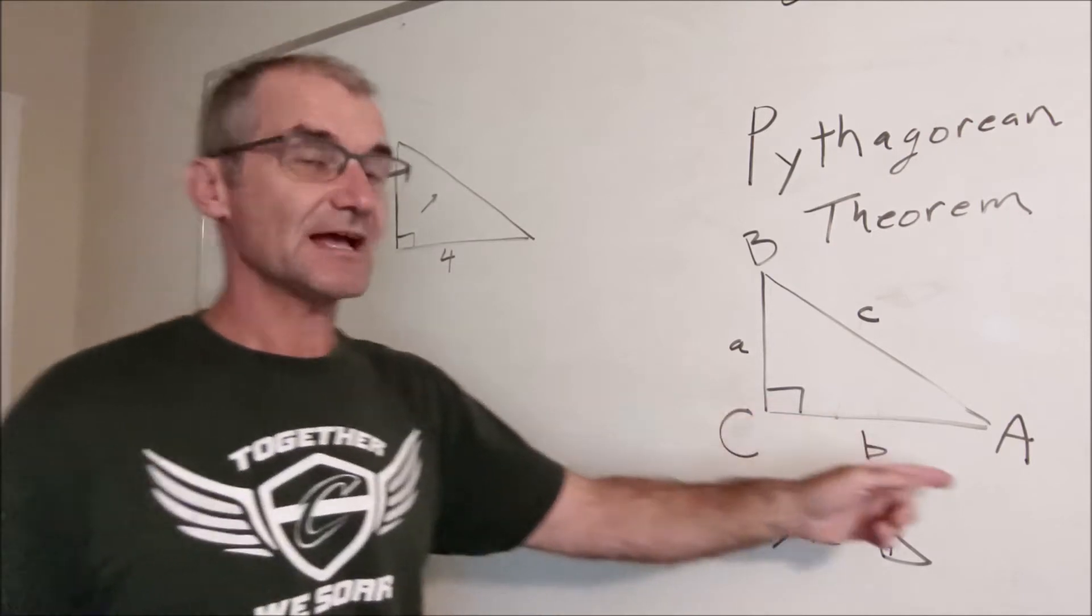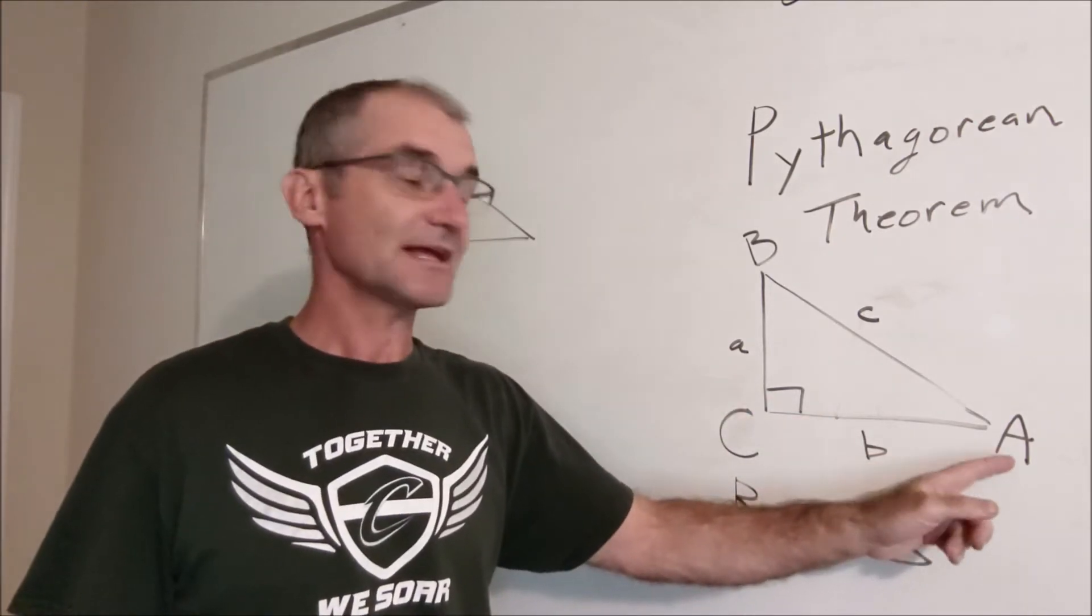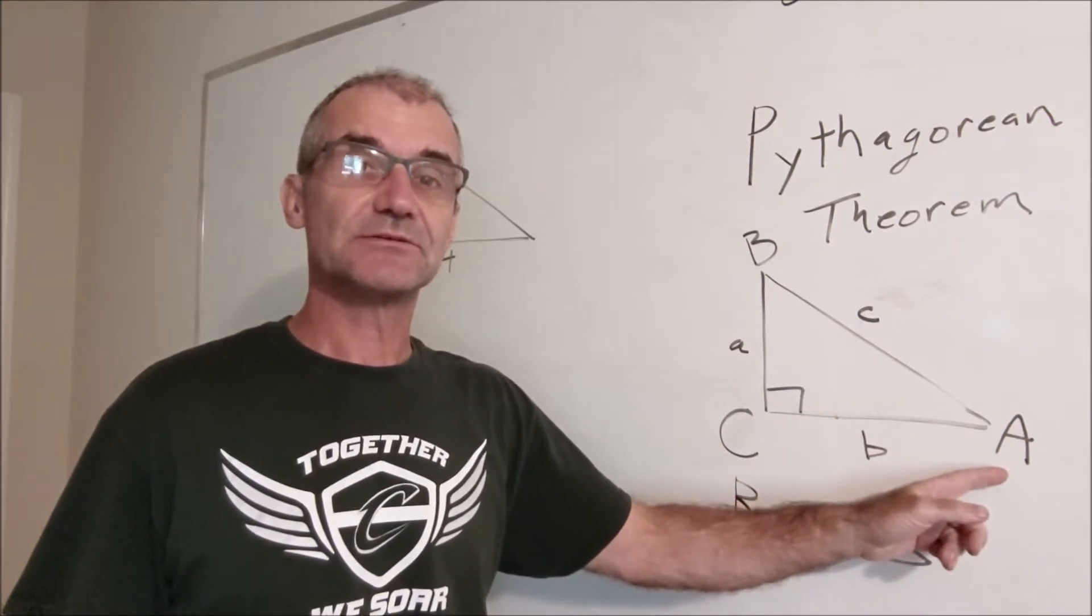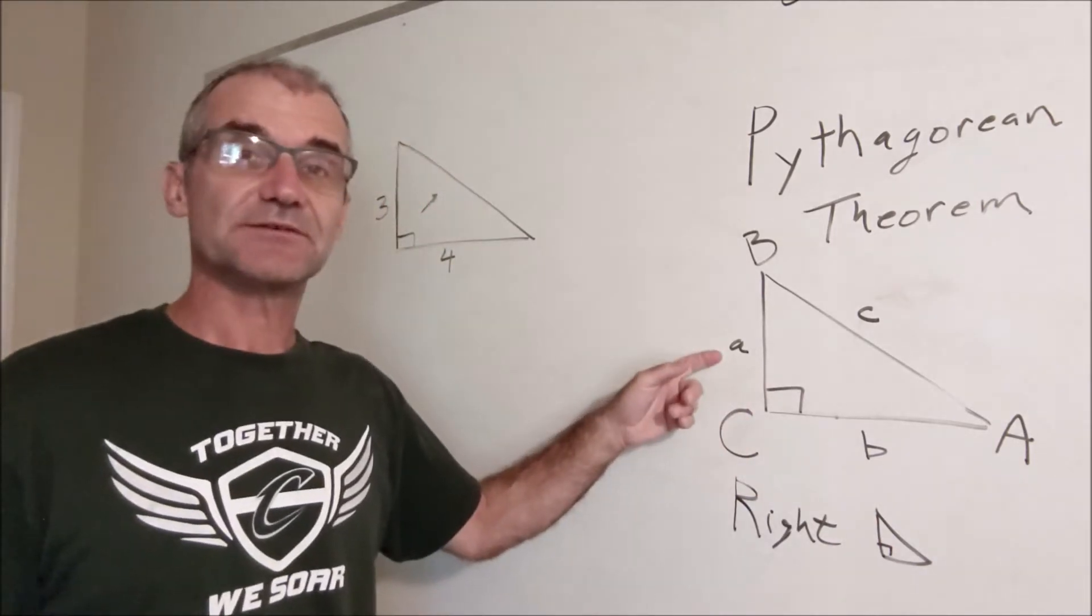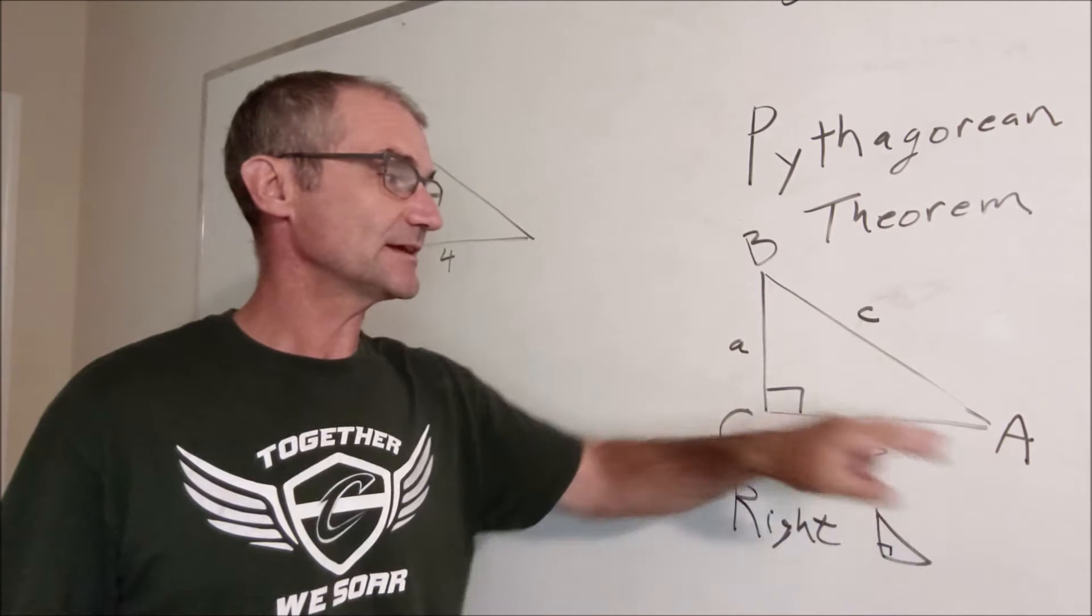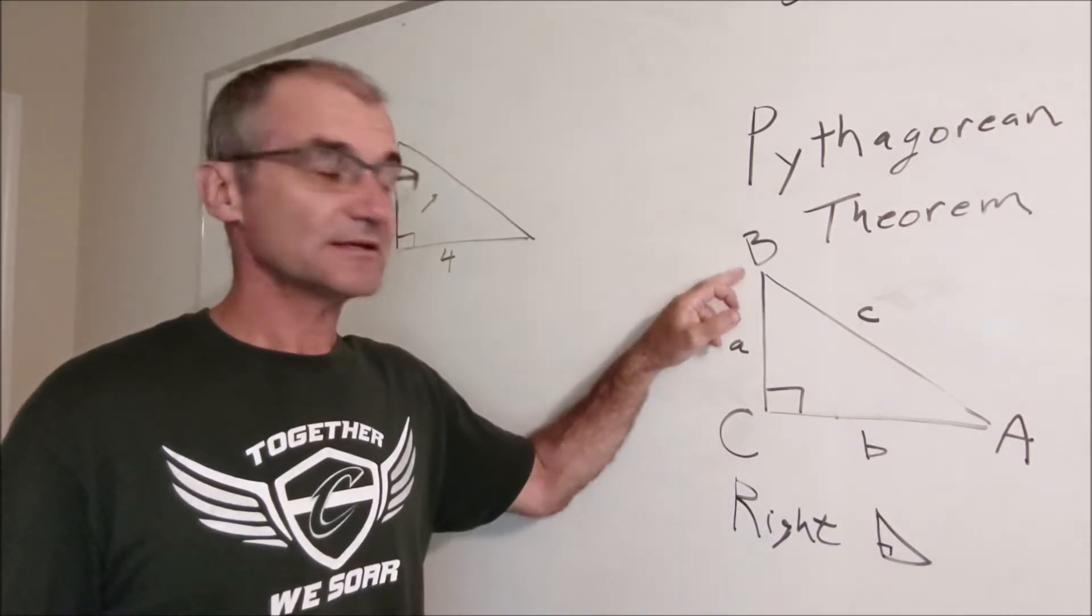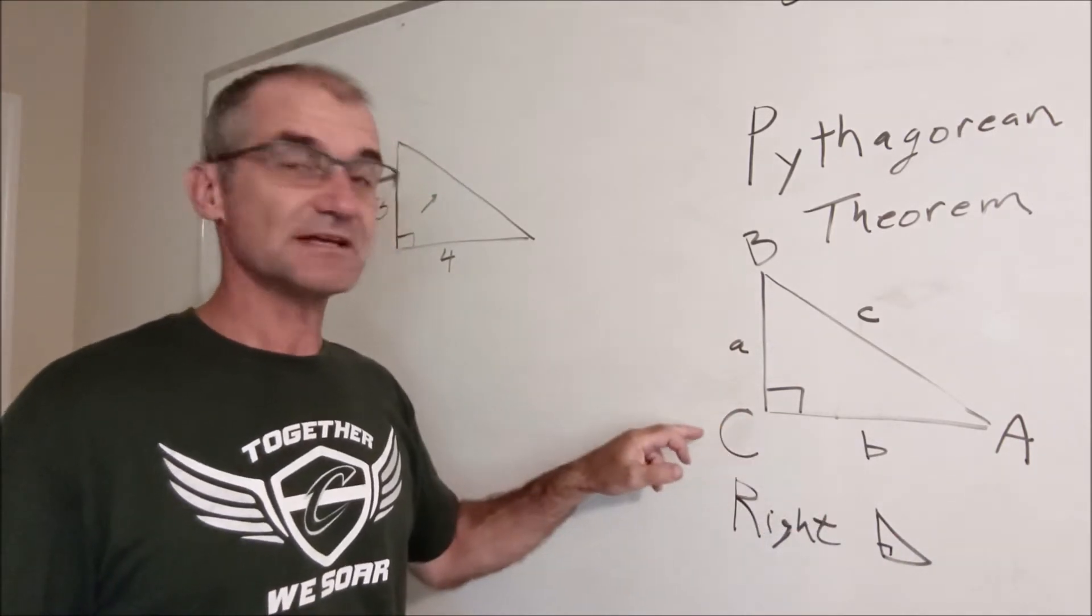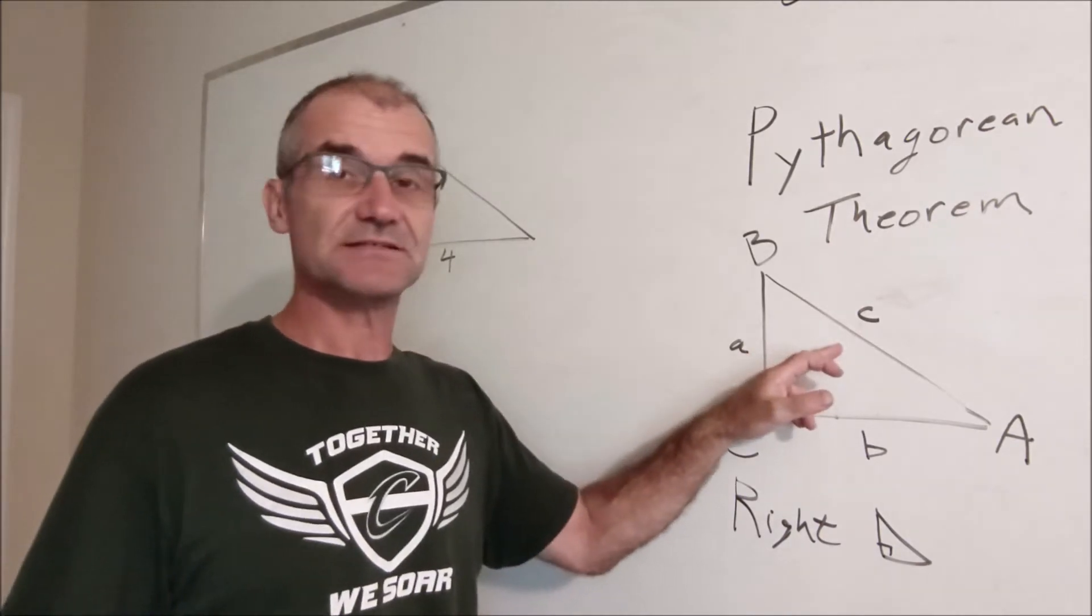The standard in math is a capital letter for the measure of an angle, lowercase letter for the length of the side opposite that angle. So if this is angle A, this is side a. This is angle B, this is side b. This is angle C, this is side c.